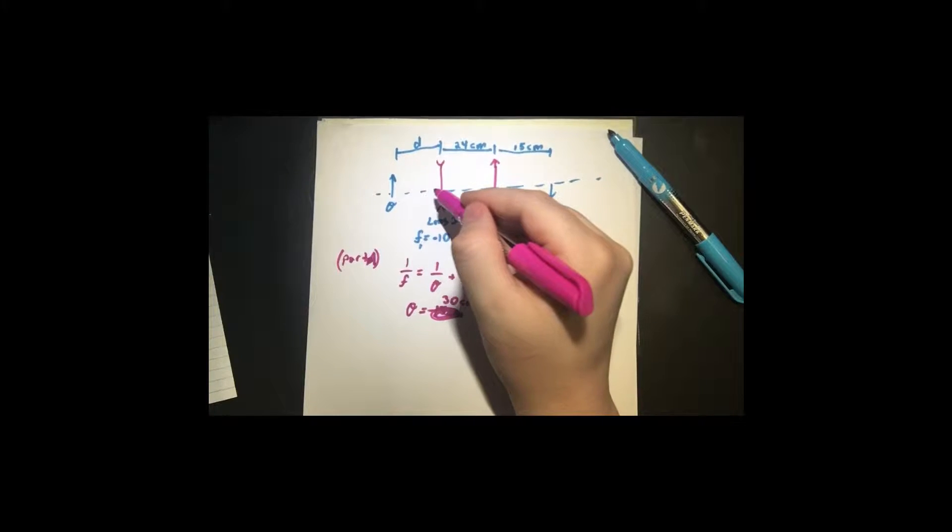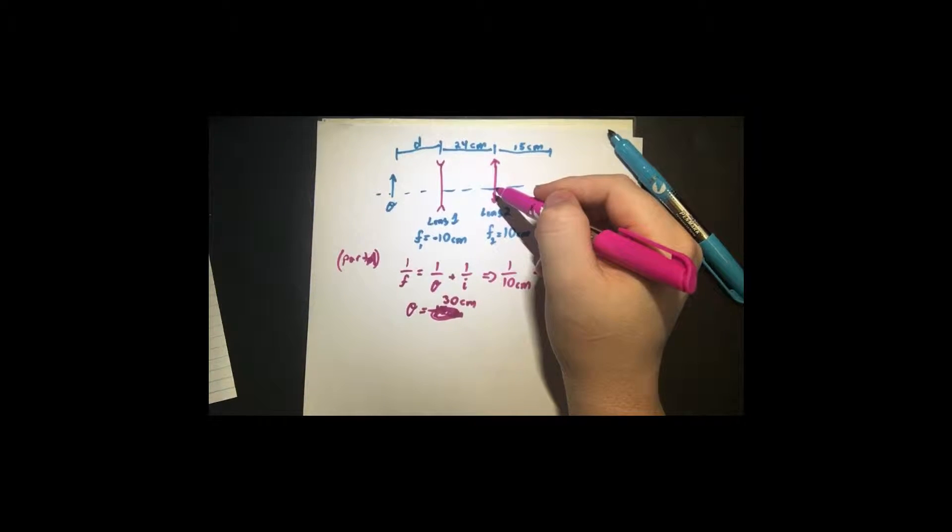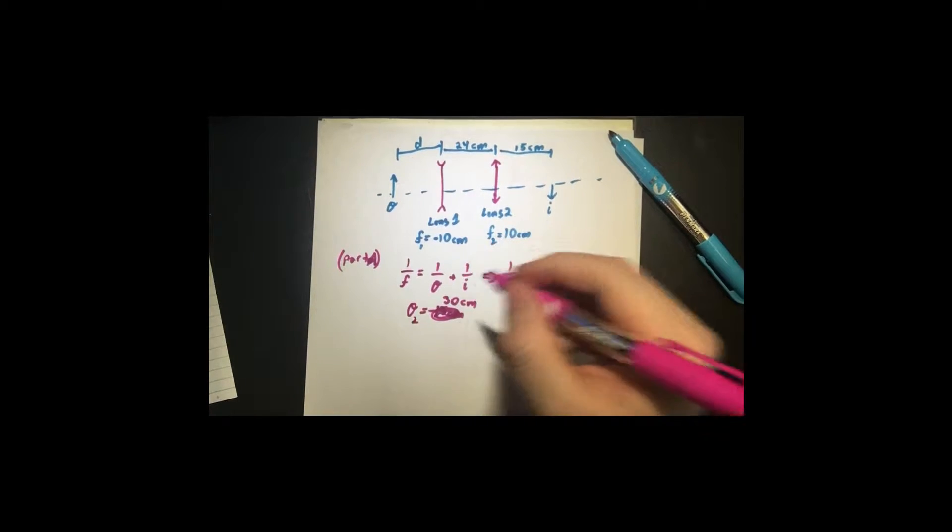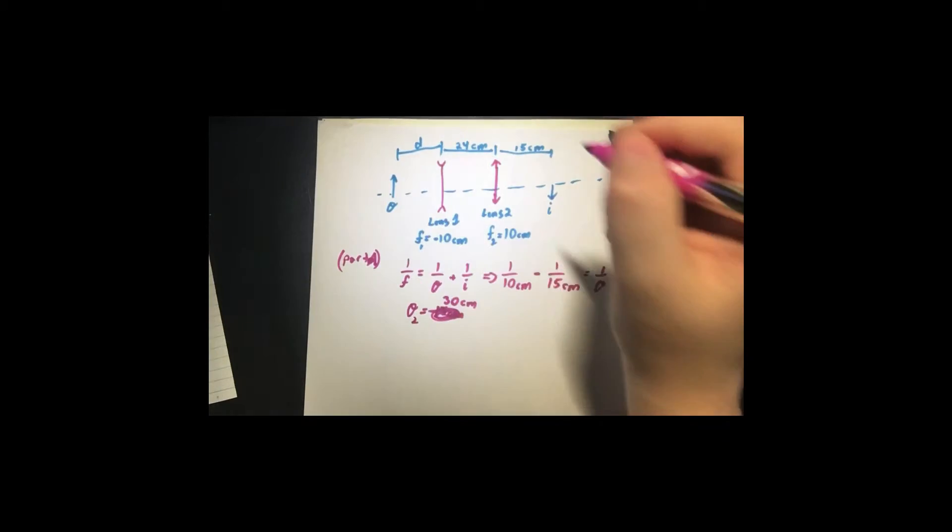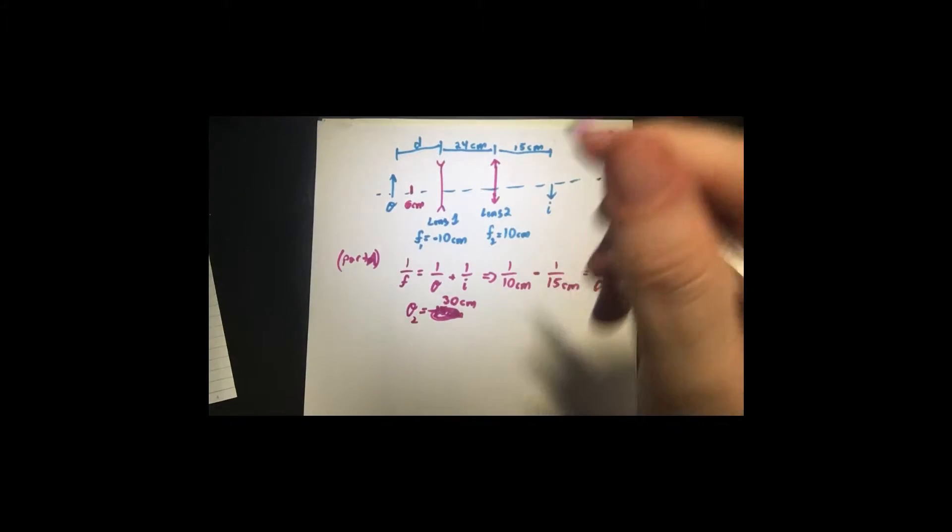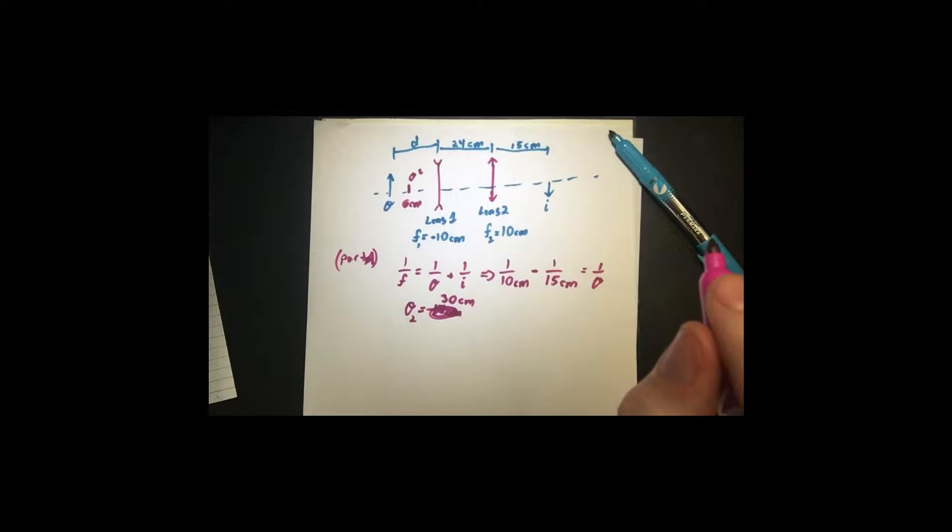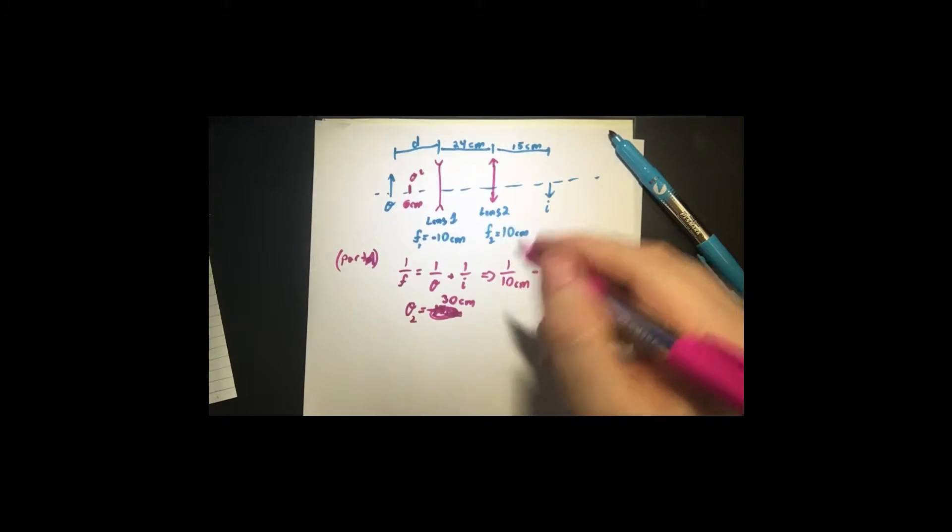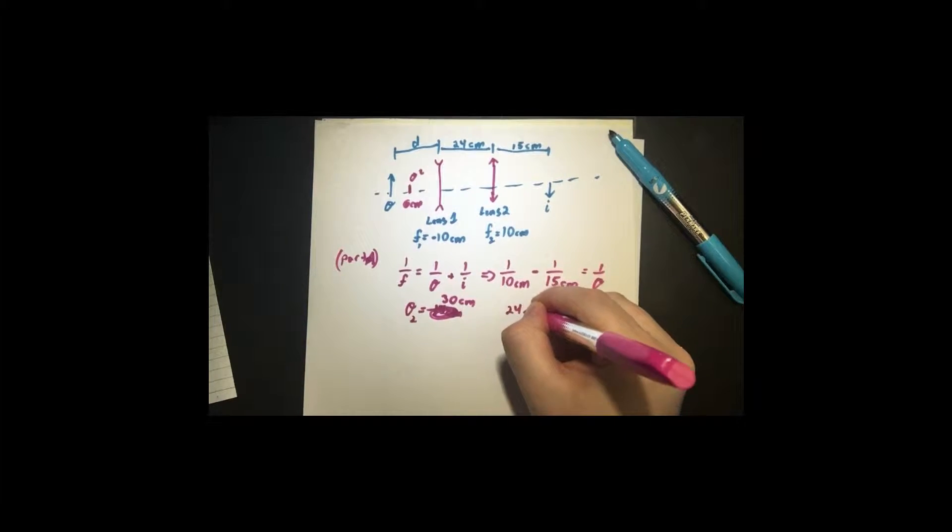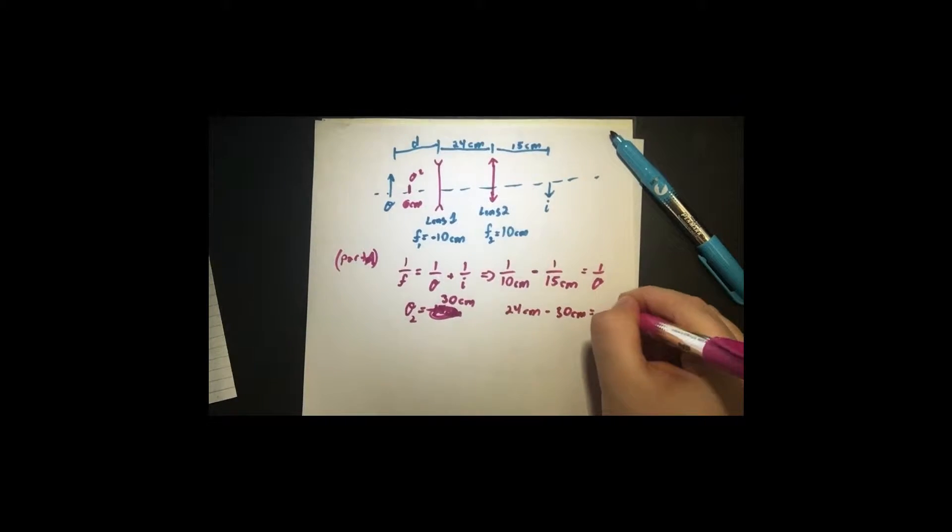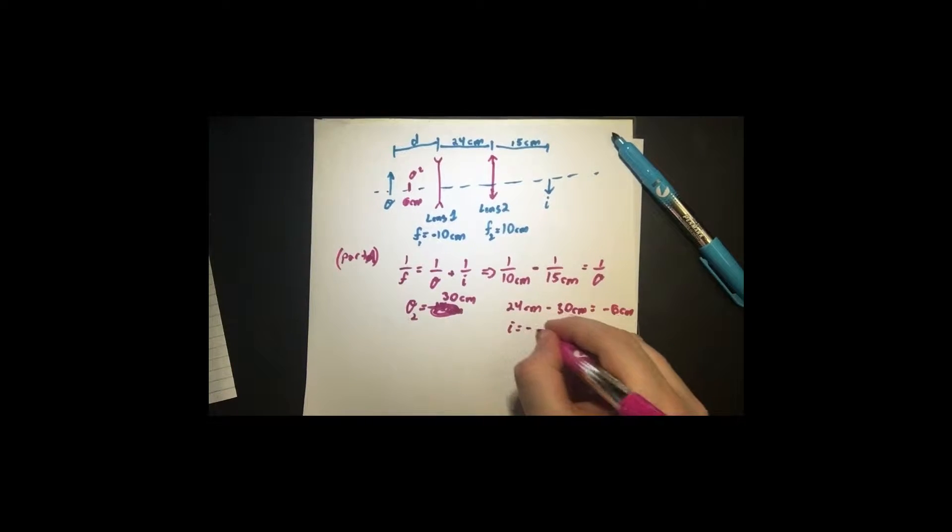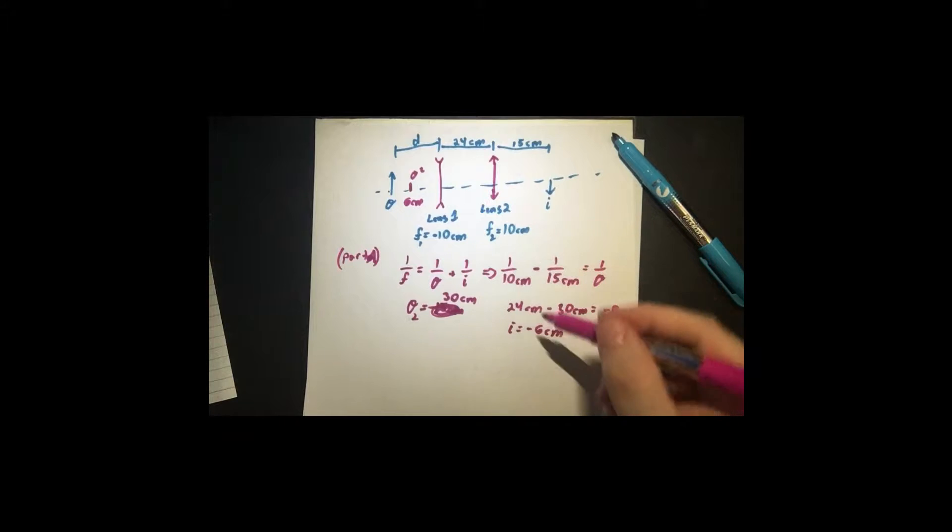So for it to be the object of the second lens, we must have an image of the first lens. So we get an image from the first lens, which then becomes the object of the second lens. If this is 30 cm away, that means our image 1 is going to be somewhere over here. In fact, it'll be 6 cm. So if that's the case, our distance is 24 cm minus 30 cm equals negative 6 cm. So that is actually our image distance. That is actually our image distance that we need. So that's our image distance for lens 1, which is the object distance for lens 2.